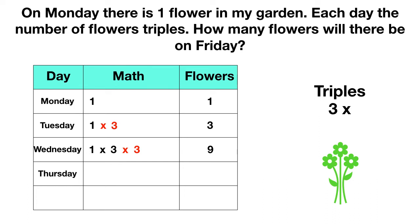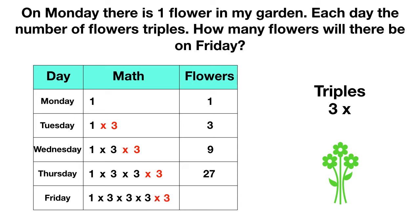On Thursday, we take the same amount as before and triple it again — multiply by three. One times three times three times three gives a total of 27 flowers. On Friday, we take our same amount and multiply by three again. If you solve this out, you get 81. So on Friday, there are 81 flowers in my garden.